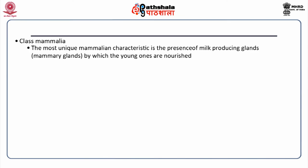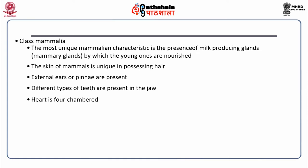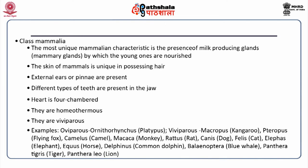Class mammalia: the most unique mammalian characteristic is the presence of milk-producing mammary glands by which young ones are nourished. The skin possesses hair. External ears or pinnae are present. Different types of teeth are present in the jaw. The heart is four-chambered. They are homeothermous and viviparous. However, ornithorhynchus is oviparous. Other examples include macropus, pteropus, camelus, macaca, rattus, canis, felis, elephas, equus, delphinus, panthera tigris and panthera leo.